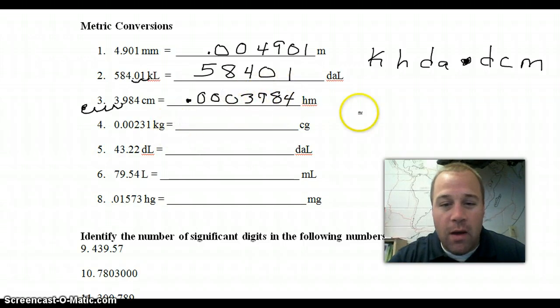The next one is kilograms to centigrams. 1, 2, 3, 4, 5 to the right. So 1, 2, 3, 4, 5: 231.